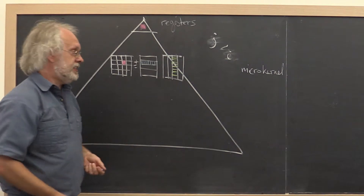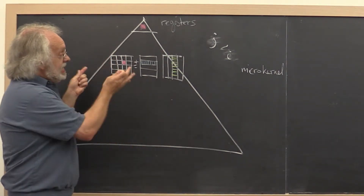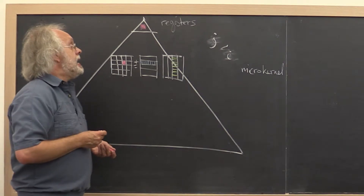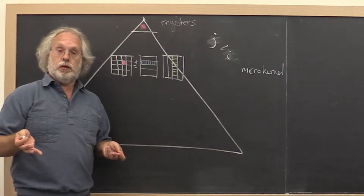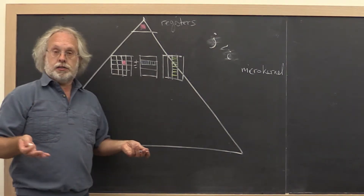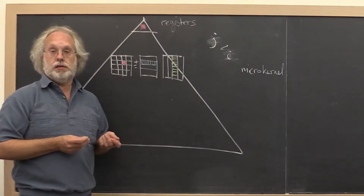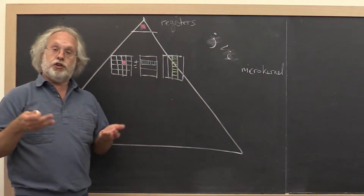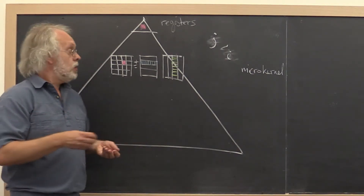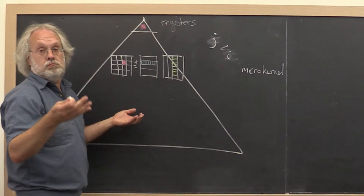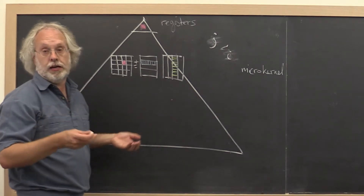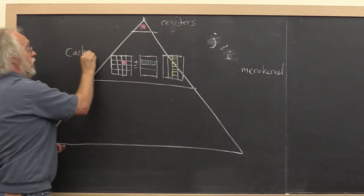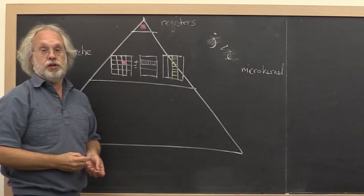And if you look at the graphs that that created, this actually achieved really good performance when the problem size was small. What you just learned in the launch of this week was that a modern CPU has a hierarchy of memories. That should help you understand that the reason you got very good performance when the problem size was small was because the problems fit in one of the caches. So as long as the complete problem fit in the cache, we achieved high performance.